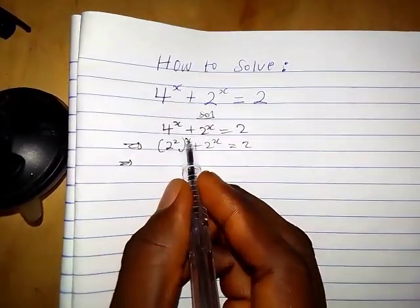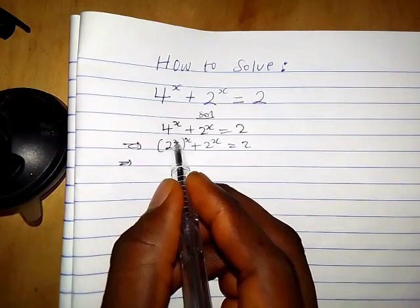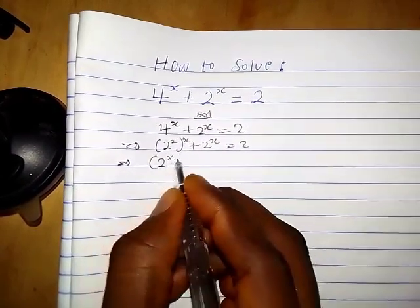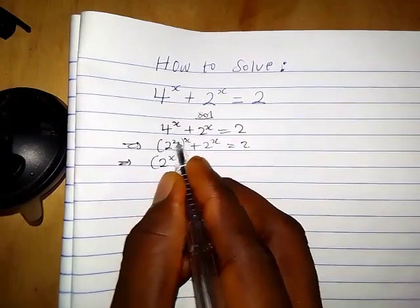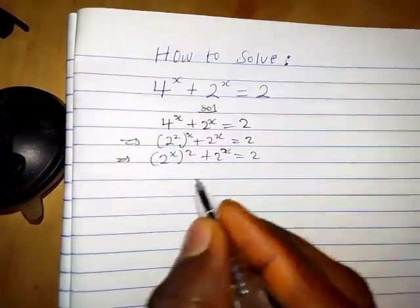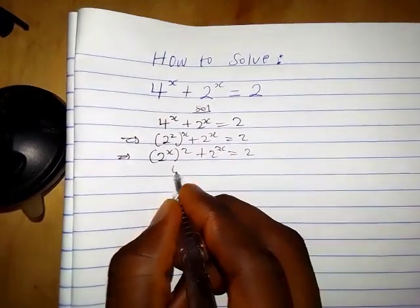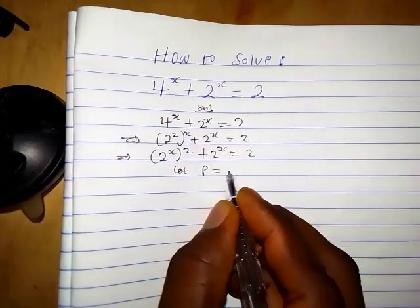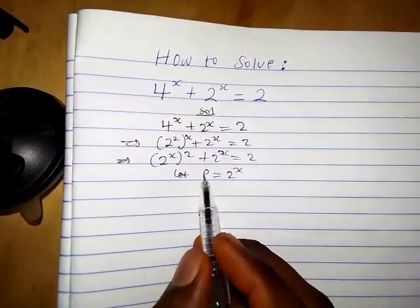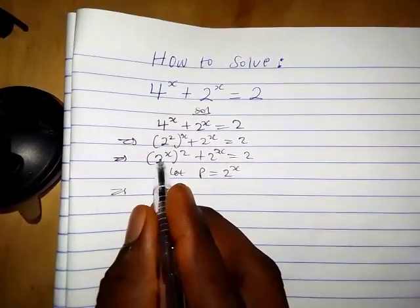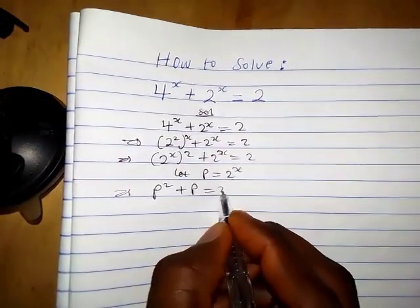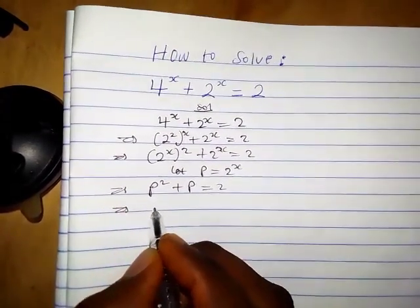The x comes into the bracket and 2 comes out, so we have 2 raised to the power 2x plus 2 raised to the power x equals 2. Now let's suppose p equals 2 raised to the power x. So anywhere we find 2 raised to the power x we replace it by p, giving us p squared plus p equals 2.